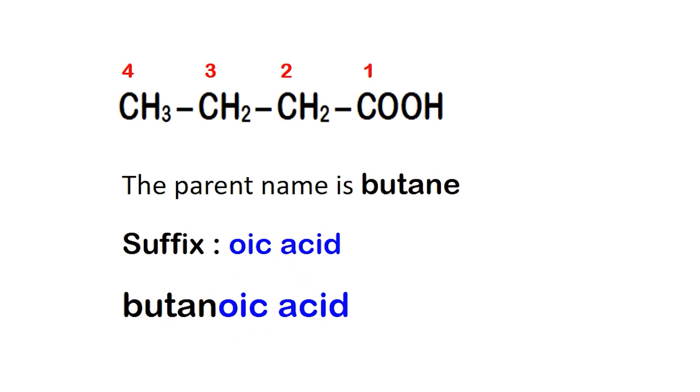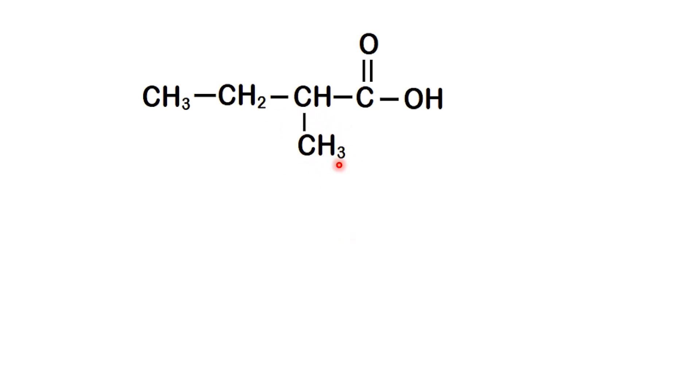So that was a simple straight chain. Now, what happens when the chain has a branch? Let's take this example. The longest chain containing the carboxyl group has four carbons, so the parent is butane.